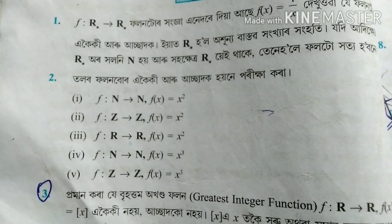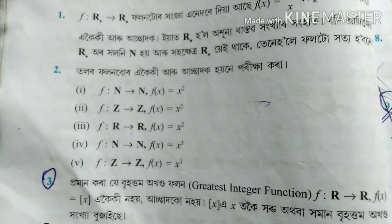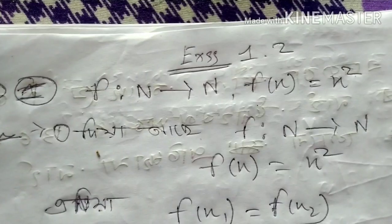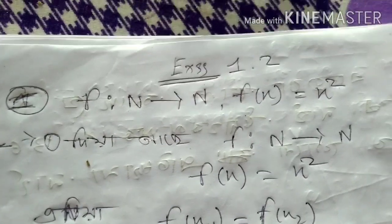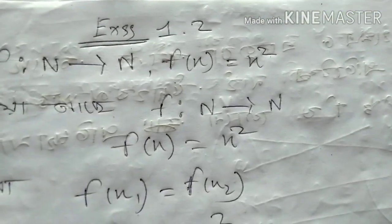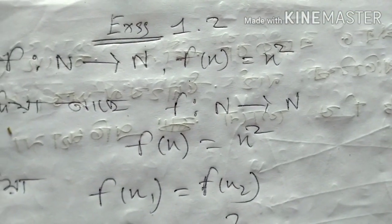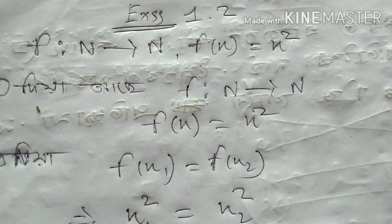The function is f of n to n. This is f of x squared. f of x is equal to x squared. This means f of n to n. This is f of x.